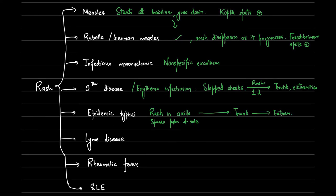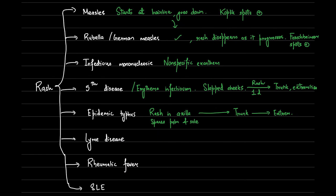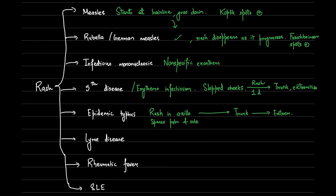Epidemic typhus is caused by Rickettsia prowazekii, and here the rash will first appear in the axilla, 4-5 days after the onset of fever, then spread to the trunk and later to the extremities. It spares the face, palms, and soles, and the rash will be confluent as it progresses. Remember that epidemic typhus spreads by lice.